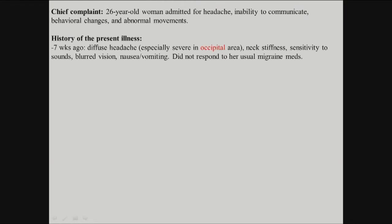History of the present illness — how did this happen? Seven weeks ago: diffuse headache, especially in the occipital area, neck stiffness, sound sensitivity, blurred vision, nausea, vomiting. She had a history of migraine, she took her migraine meds, and it didn't help.